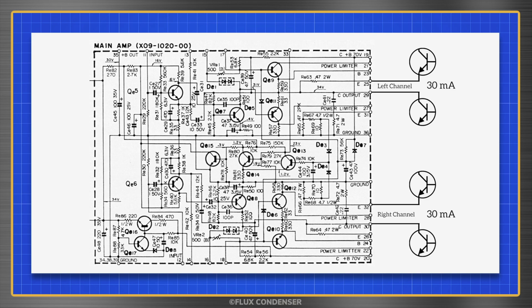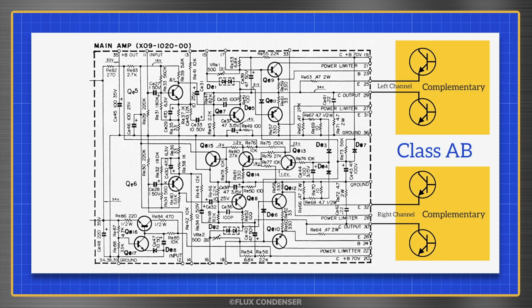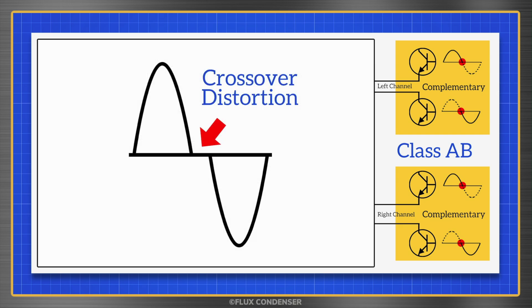And at idle, that's exactly what we want. In a class AB output, the transistors work in a complementary fashion. One transistor handles the positive of the sign, and the other handles the negative. Transistors require a certain amount of current to turn on, so if we allow them to turn completely off, there would be a gap in response as the sign passes the zero point. And this leads to nasty crossover distortion.